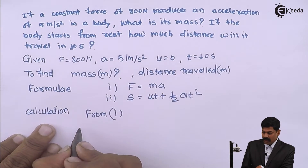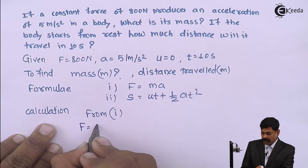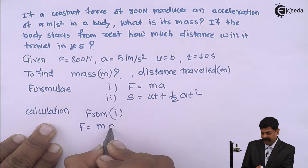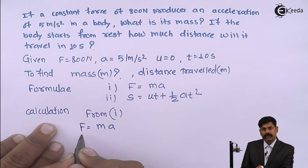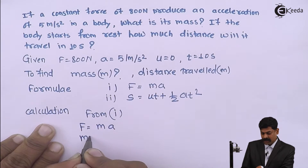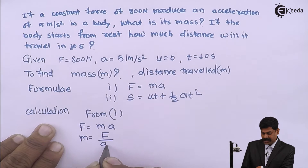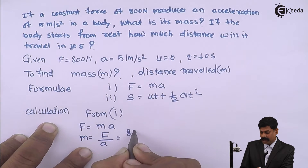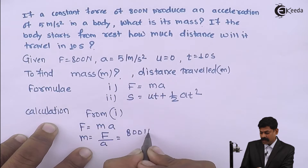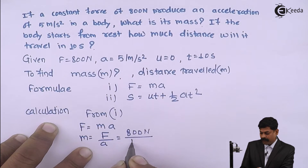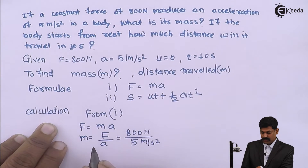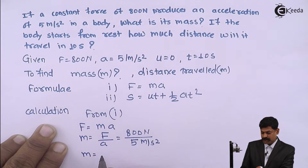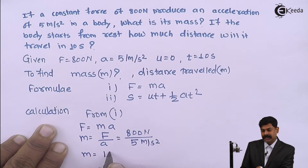From the first formula, force equals mass into acceleration. We have to calculate mass, so mass equals force divided by acceleration. Force is 800 newton and acceleration is 5 meter per second square, so we get mass equals 160 kg.